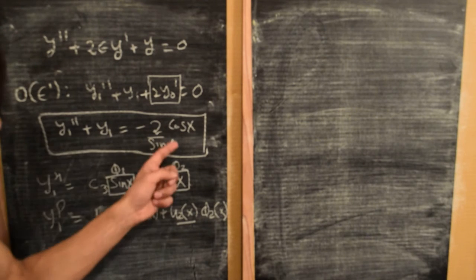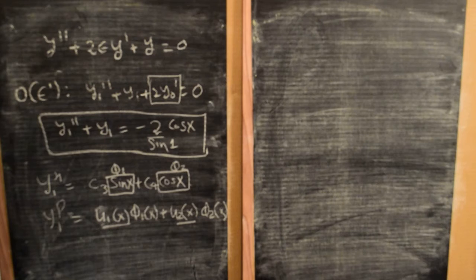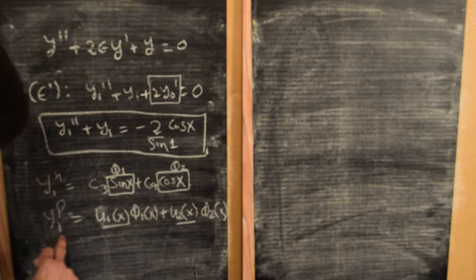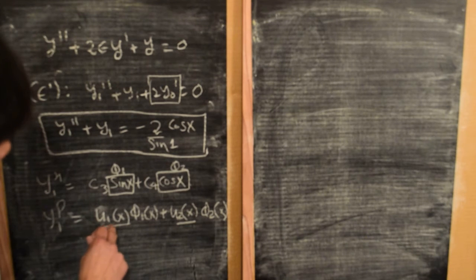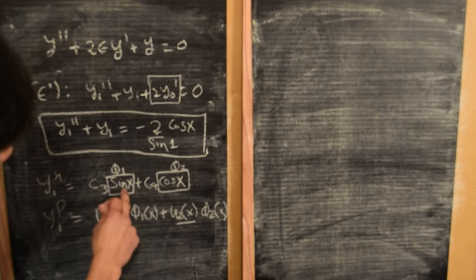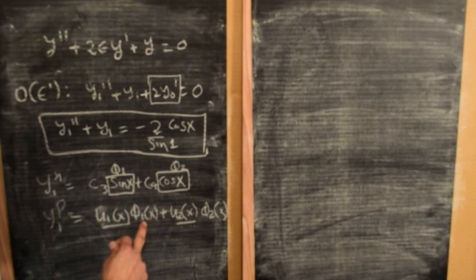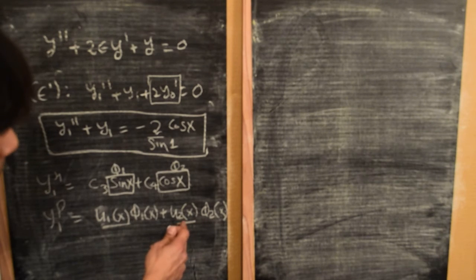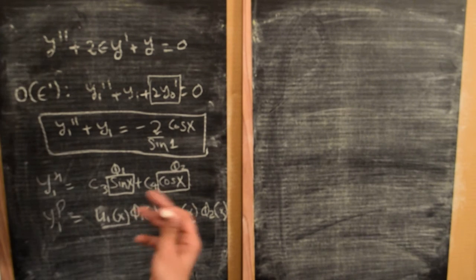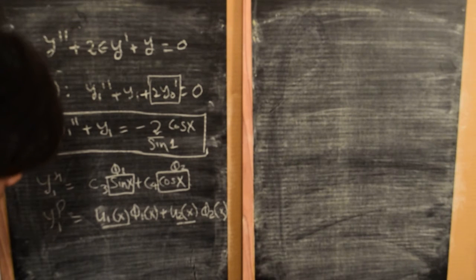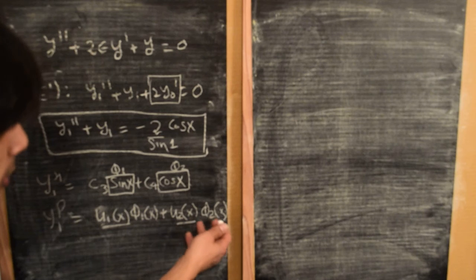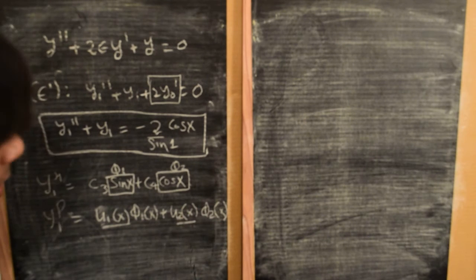One of the ways to determine the particular solution is to use the method of variation of parameters, where we assume a solution for y₁ of the form u₁(x)·φ₁(x) plus u₂(x)·φ₂(x). Here φ₁ is sine of x and φ₂ is cosine of x, and u₁ and u₂ are undetermined functions of x which we need to find.